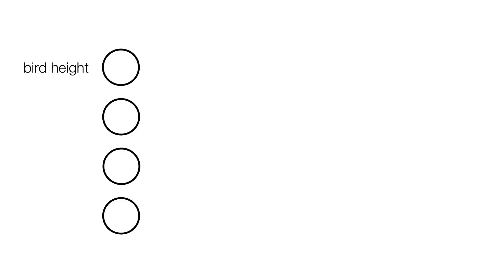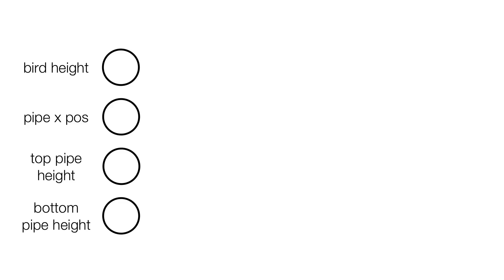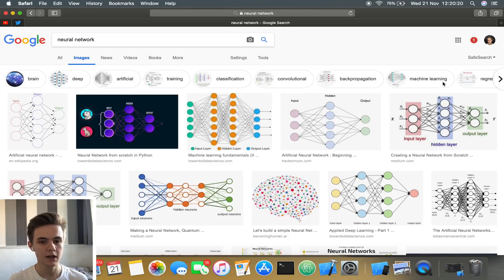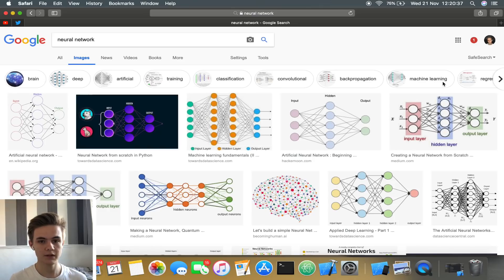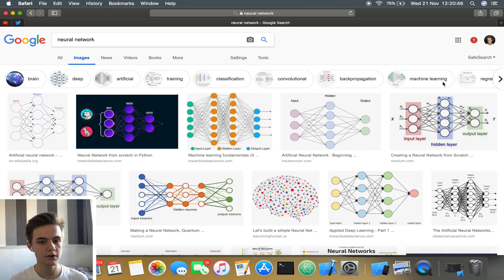The input layer will have four nodes. Each of these nodes will be a piece of data that the bird needs to interpret to successfully play the game. These four pieces of data will be: the height of the bird (its Y position on screen), the distance across the screen of the pipe (the X position), and then the top and bottom heights of the pipe. The middle layer is going to have six nodes, and the output layer will only have a single node — all we need to determine is whether the bird jumps or not. If the output comes out as more than 0.5, the bird will jump; if not, it stays falling.